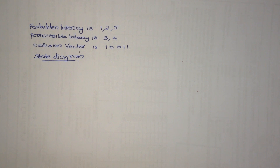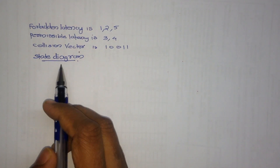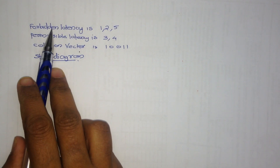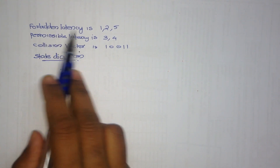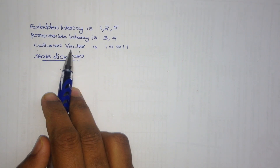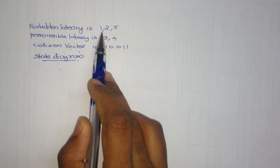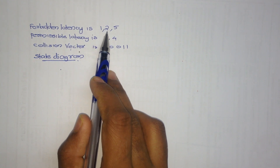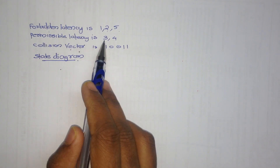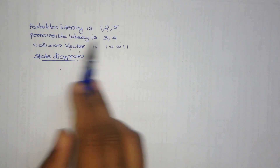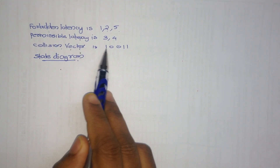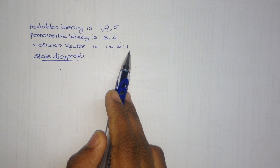Hi friends, today we are going to discuss about how to draw the state diagram. In the question we have to find the forbidden latency and permissible latency collision vector. We found out 1, 2, 5 as forbidden latency and remaining 3, 4 is permissible latency. Collision vector is 1, 0, 0, 1, 1.